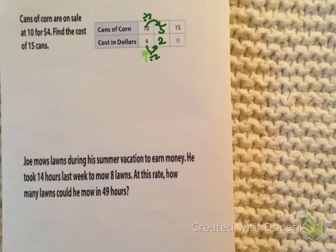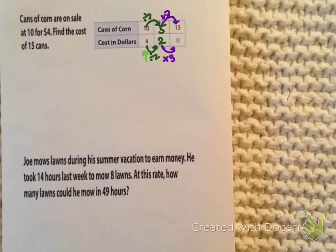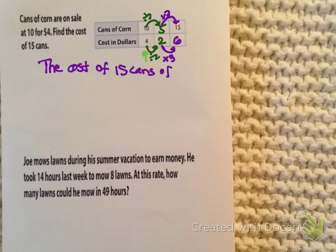From 5, I can get to 15. So to go from 5 to 15, I'm going to scale up by multiplying by 3. Fair is fair — multiply by 3 on the bottom as well. 5 times 3 is 15, and 2 times 3 is 6. So we would say the cost of 15 cans of corn is $6.